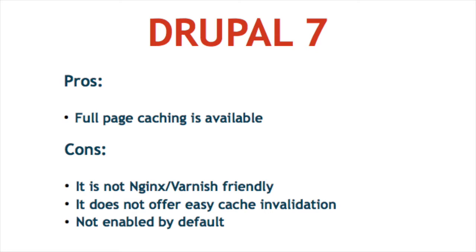Drupal 7 also does not provide easy cache invalidation. If you make a change to a page or a menu, how do you invalidate the cache if it's sitting in the RAM of your server cached by Nginx or Varnish? The problem is that Drupal 7 does not know how to talk to those reverse proxies — it doesn't add HTTP headers to the response, so Nginx doesn't know how to handle the request.